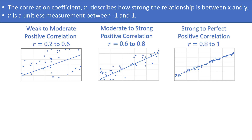If the correlation coefficient is between 0.6 and 0.8, we might say we have a moderate to strong positive correlation. If it's between 0.8 and 1, we have a strong to perfect positive correlation — the dots are even closer to the upward trending line. At the extreme of r = 1, every single dot fits exactly on the line. In general, the closer r is to 1, the closer the line is to all the dots.